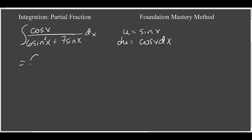And then our problem becomes the integral of du over 6u squared plus 7u, and what we have left here, cosine of x dx, is actually just equal to du.